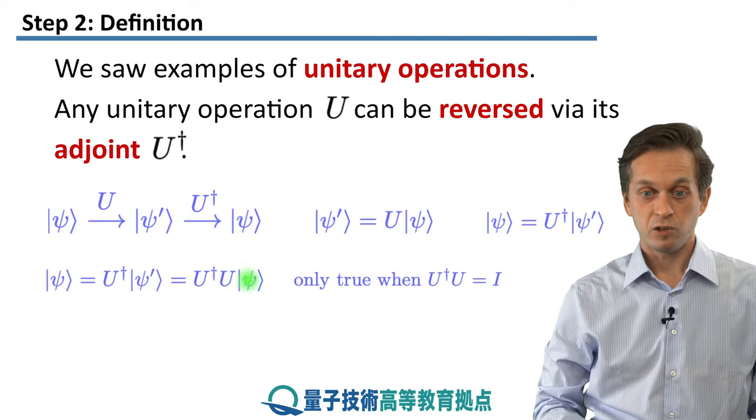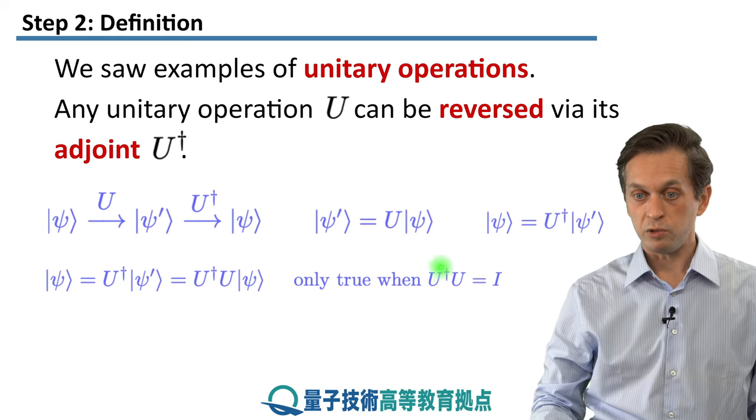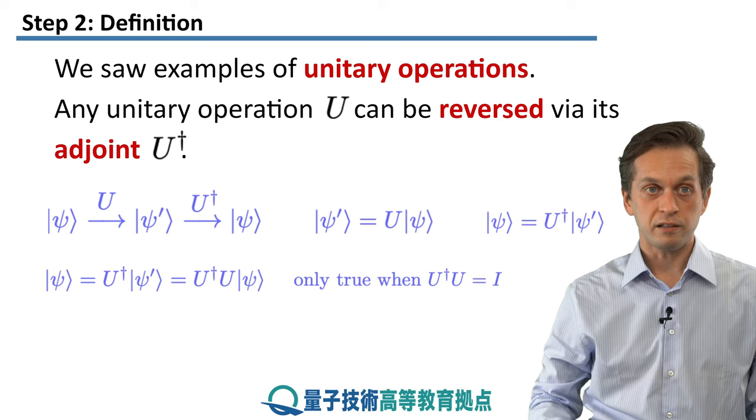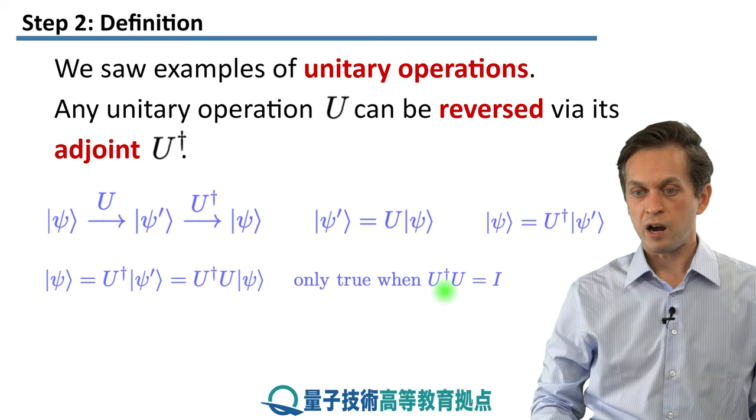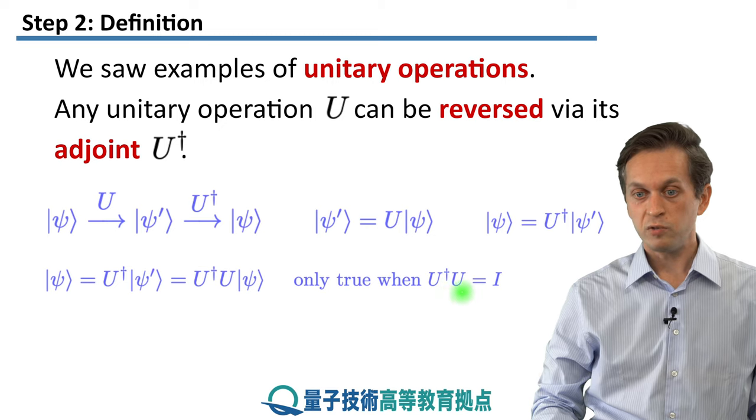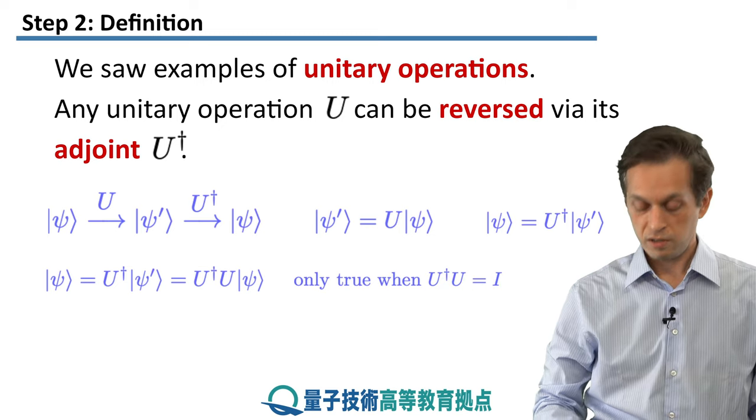And that's it. You see that in order for these sides to be equal, we must conclude that U† times U is the identity operator. And that makes logical sense. We are undoing the operation U with the adjoint. So the total effect of these two is we are doing nothing.